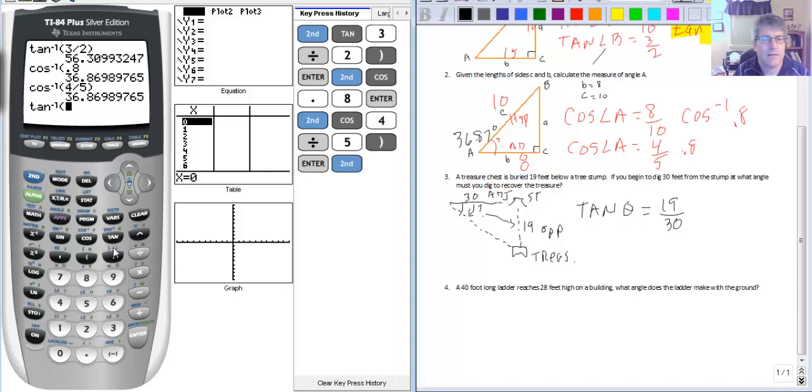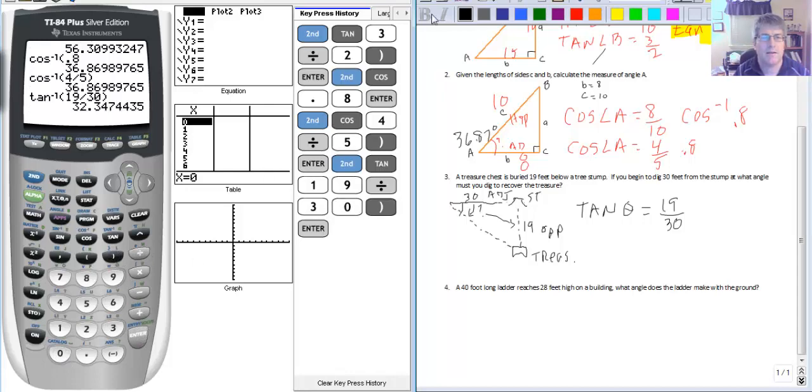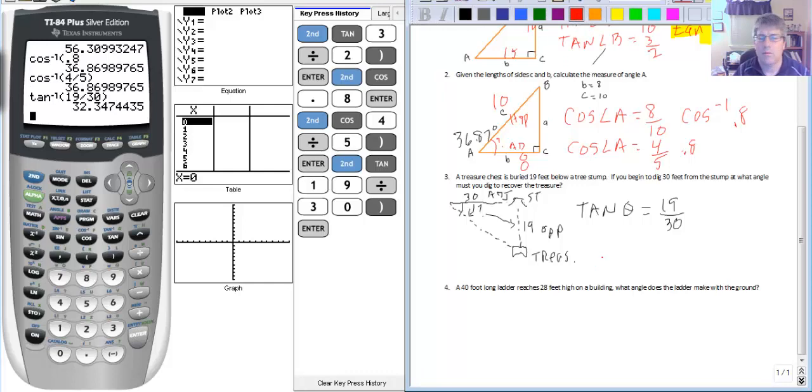So second tangent. 19 divided by 30. I don't even have to figure out what that decimal is. The calculator will do it for me. And we will dig at 32.35 degrees. So the measure that angle is 32.35.